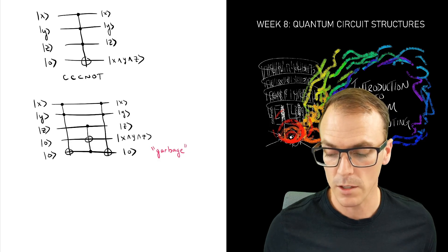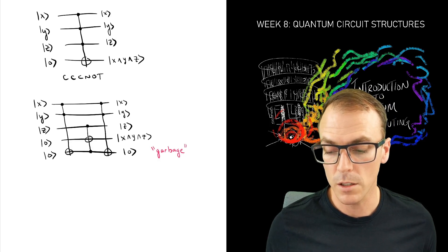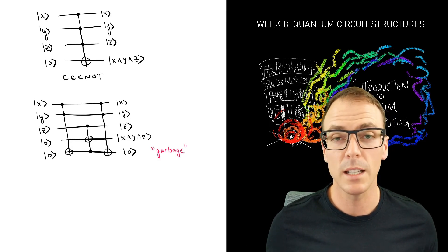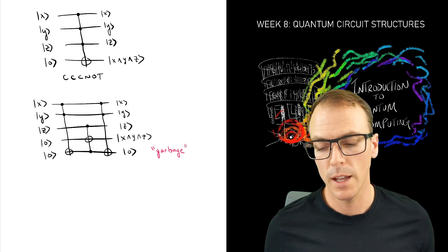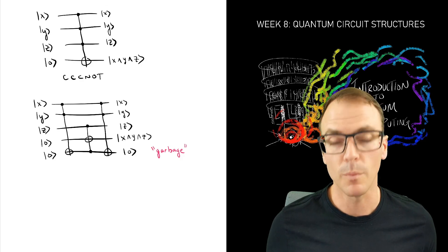So it required this extra qubit to do, and it created some entanglement with that qubit. However, we could undo that to save ourselves from this garbage.